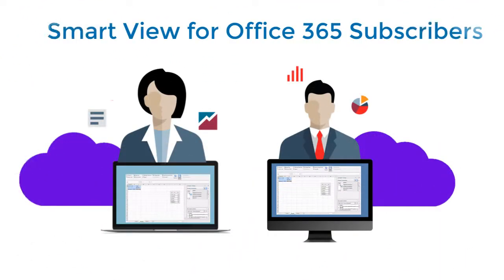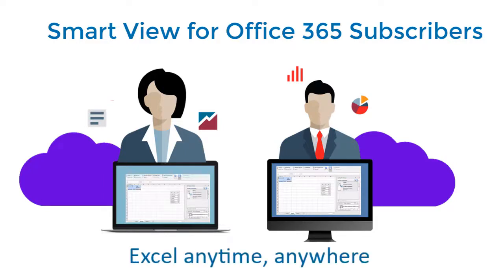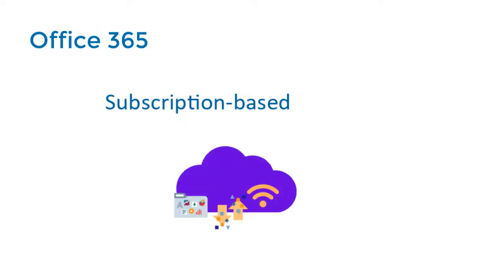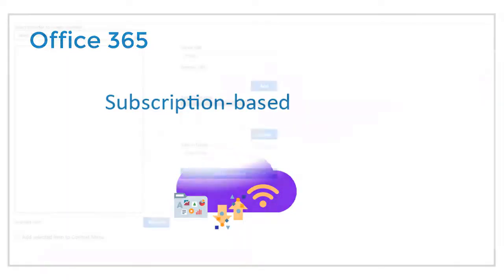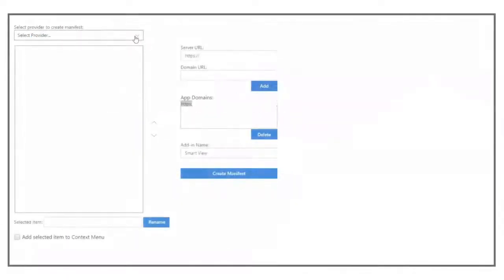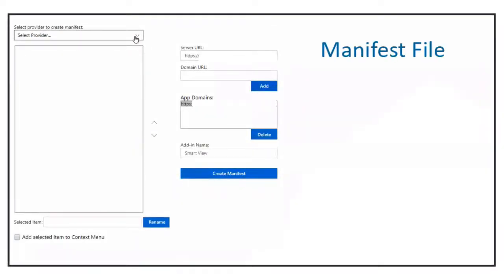Smart View enables Office 365 subscribers running Microsoft Office in a browser or as a desktop installation on the Mac to work in Excel anytime, anywhere. Office 365 is a subscription-based cloud version of Office. Because it's hosted on the cloud, it's easy to deploy Smart View for Mac or Browser using the provided manifest file utility.